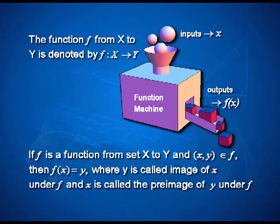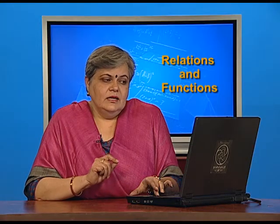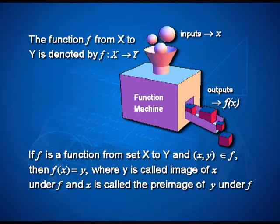In language of our functions, we can also call these inputs to be the variable x, and the function machine, if it represents say the function f, then it throws out quantities which we write as f of x. These f of x is the output, x is the input. So, if f is a function from set x to set y and x comma y belongs to f, then we also write y to be same as f of x. Read it as f of x, where y is called image of x under f and x is called the preimage of y under f. Symbolically, we represent this function from set x to set y as f colon x arrow y.